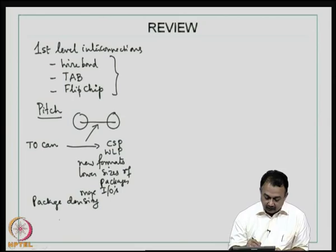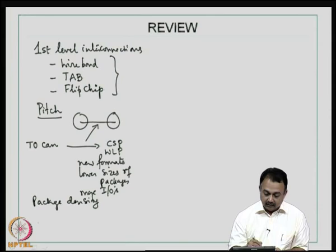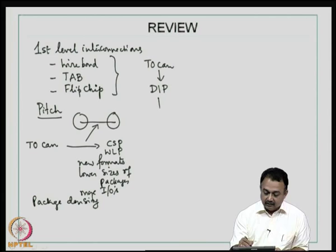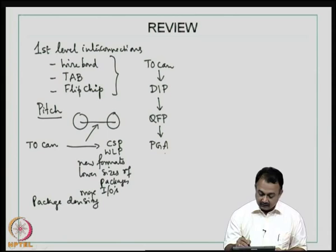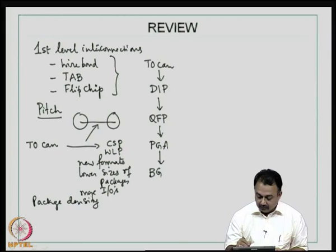This talks about package density and it can also get reflected in the assembly process. So if you can recollect, we talked about TO CAN, then the development came into what is known as DIP packages or dual inline packages, then came the QFP packages called Quad Flat Pack packages, then came the PGA pin grid array packages that were used in a lot of microprocessors, then came the migration to ball grid array BGA packages, and finally today we have what is known as the CSP class of packages.